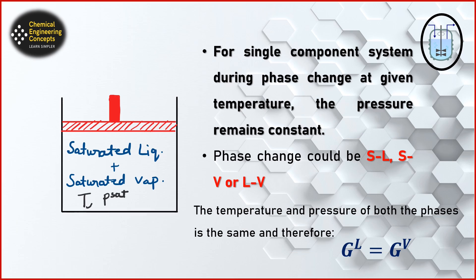Suppose we have a piston-cylinder arrangement in which we have saturated liquid and saturated vapor both present at the same temperature, and both have their particular saturation pressure. When we have phase change — it could be solid to liquid, solid to vapor, or liquid to vapor, or vice versa — in a phase change operation, temperature becomes constant and saturation pressure is also constant. If the temperature and pressure of both phases are the same, the Gibbs free energy for both phases will also be the same.